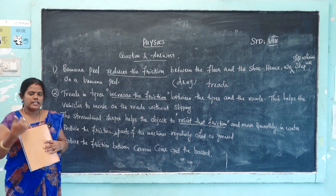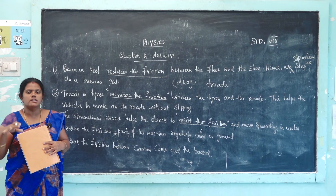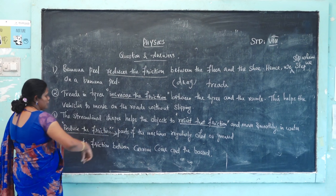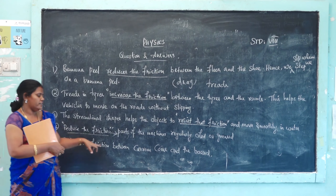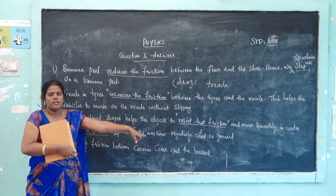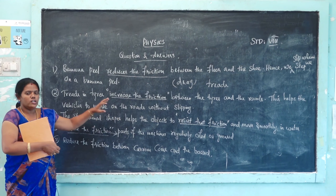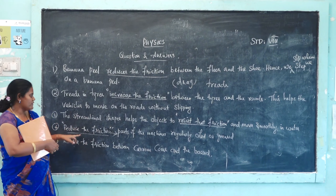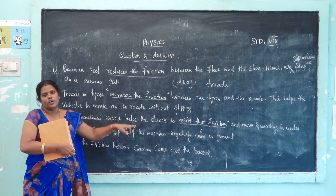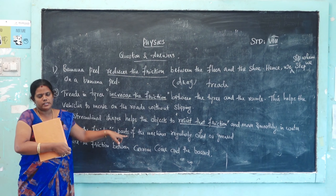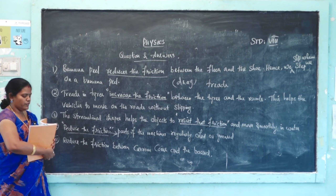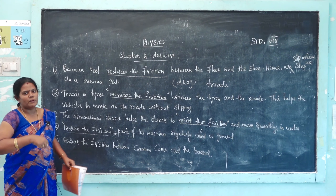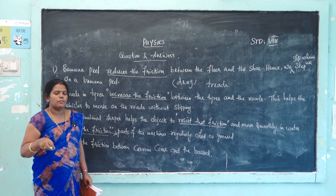Fourth: why are parts of machines regularly oiled and greased? Grease and oil applied to machine parts reduce the friction between them. Reducing friction keeps the machine running smoothly.